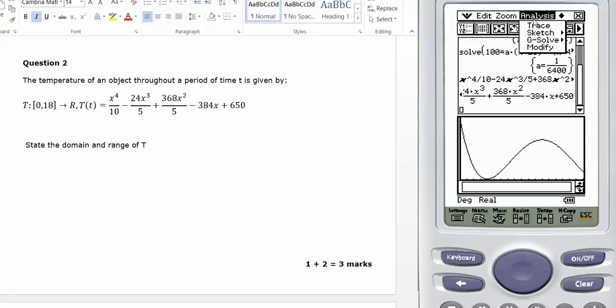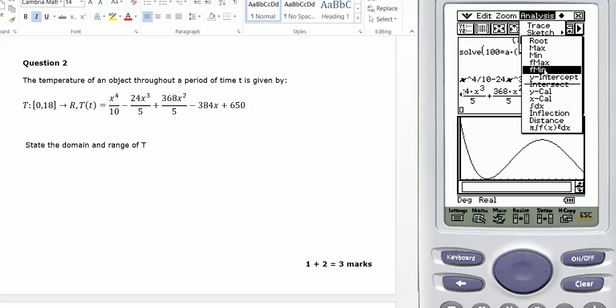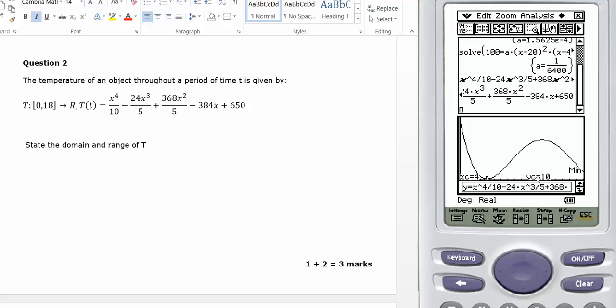So I can go analysis, G solve, F min, and that will give me the minimum value of Y in the window. And that is 10.